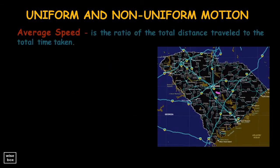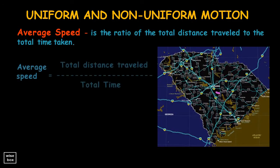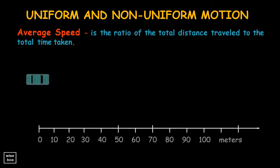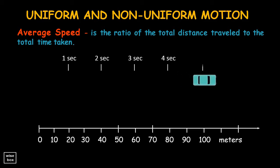Average speed is the ratio of the total distance traveled to the total time taken. The GPS system in your car or phone can show your average speed as you travel. For example, a car driver travels at constant speed for 100 meters in 5 seconds. His average speed is computed as 100 divided by 5, thus his average speed is 20 meters per second.